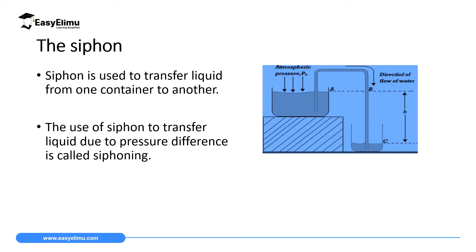Most times, people transfer liquids from one tank to another — especially water from the river to homesteads — using electrically operated or diesel pumps. But what if one cannot afford those electrically and diesel operated pumps? In physics, we give you a solution: a process called siphoning. Siphoning involves the transfer of liquids from one container to another by using a height difference.